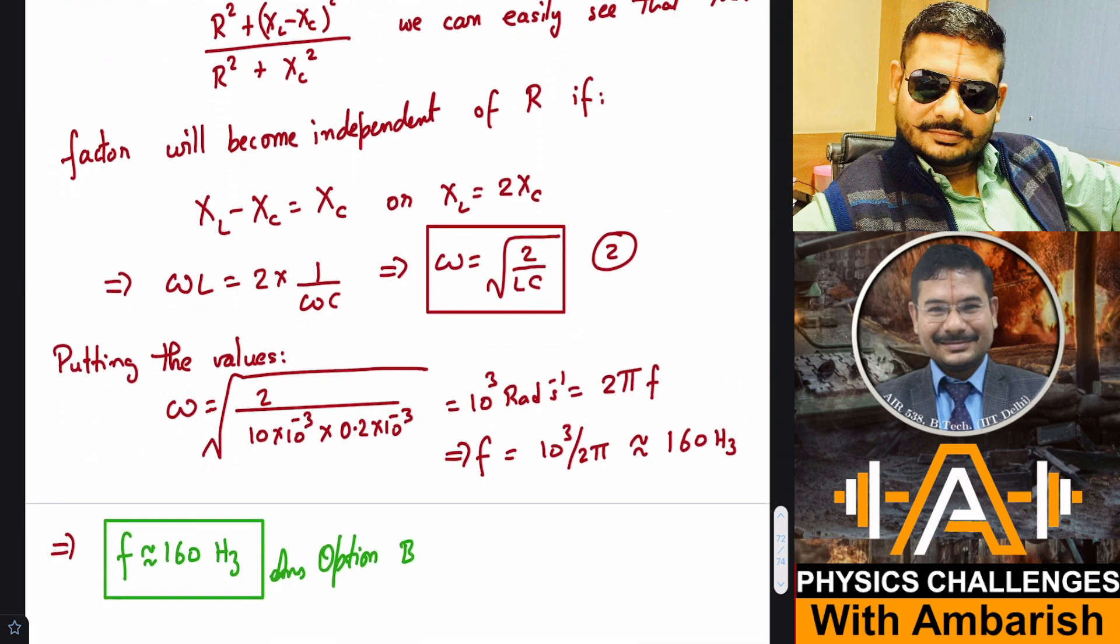I can just put in the values. L was given as 10 millihenry and capacitance was given as 0.2 millifarad. Just put in the values and this comes to be 2 times 10 to the power 3 radians per second. But this is in units of angular frequency, but I want frequency. So you equate this to 2 pi F and solve for F. This comes out to be approximately 160 Hertz, and that was our option B.